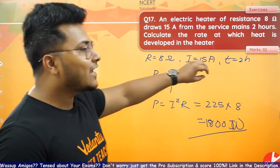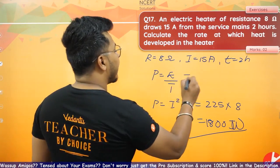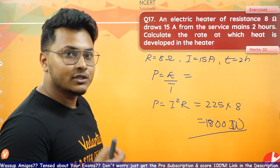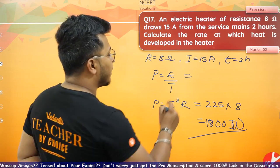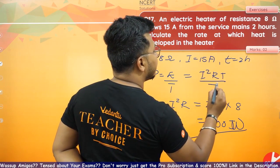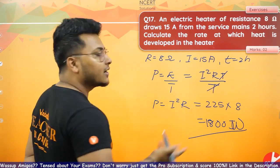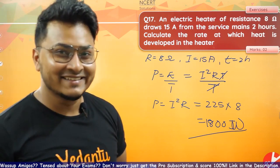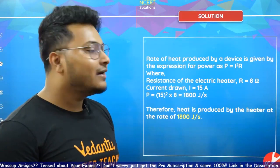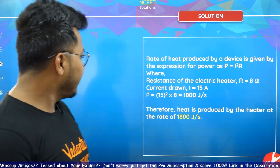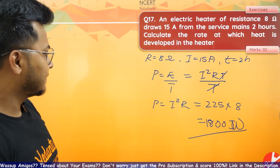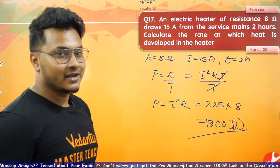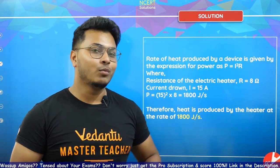Since they ask for rate — which is power — you do not need to calculate energy separately. Power = I²R directly gives you 1800 watts, which is 1800 joules per second. That is the correct answer for question number 17.